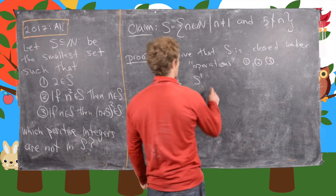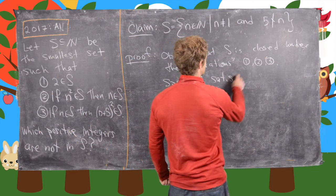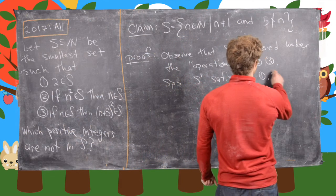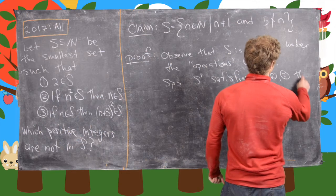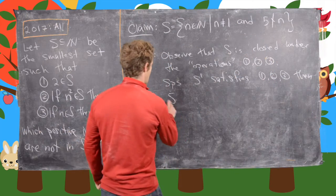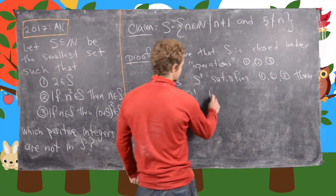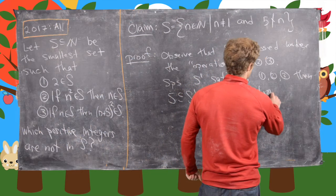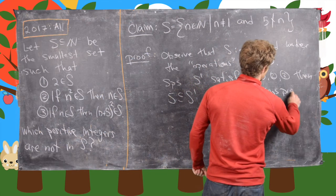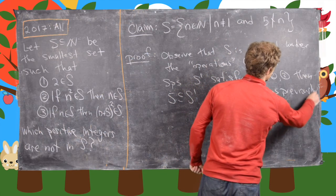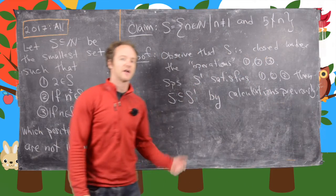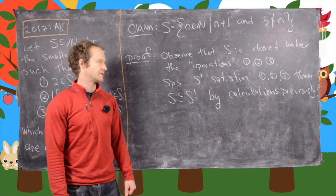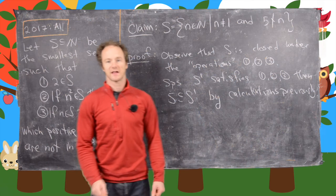So let's suppose that S prime satisfies 1, 2, and 3. So then S is a subset of S prime by the calculations that we did previously. So there's nothing to do in that case. We just use those calculations that we did before. So that's the end of this video.